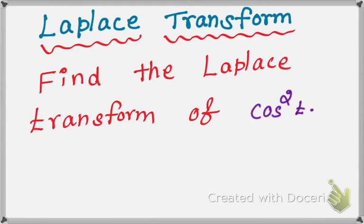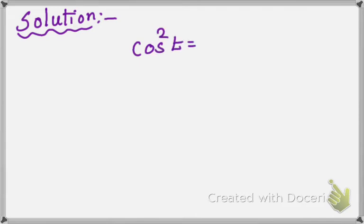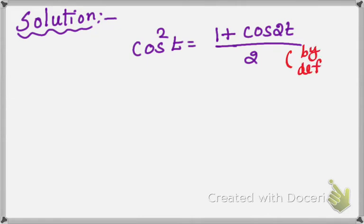Dear students, the next problem is to find the Laplace transform of cos squared t. We use the formula cos squared t equal to 1 plus cos 2t, all divided by 2. This is a formula you have to memorize. Next, we take the Laplace transform on both sides.